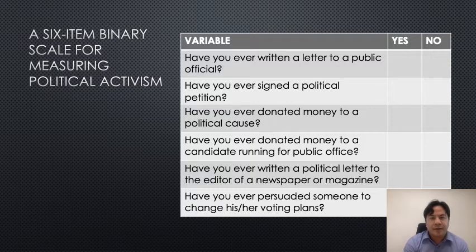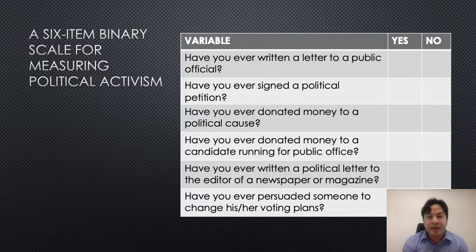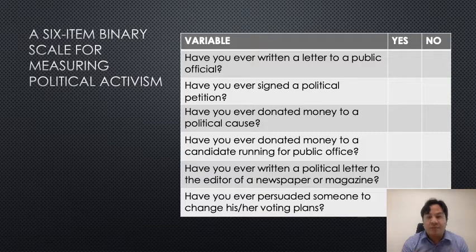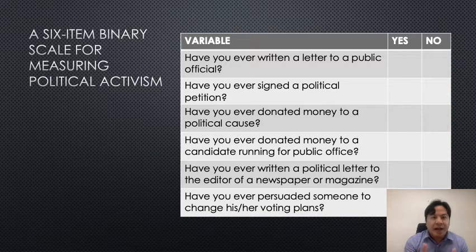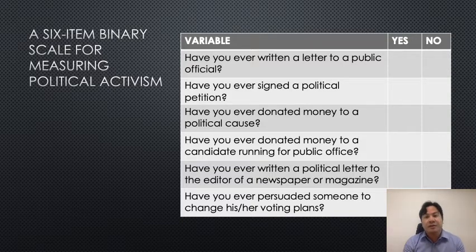This next slide shows another case of a binary scale. I want to show this because binary scales can be used to measure a particular construct by using few to several indicators that will characterize that construct. For example, let us take the construct of political activism — we would like to know if a person is just a so-so activist or a hardcore activist. We create six items describing activism, each a binary item, like 'Have you ever written a letter to a public official?' 'Have you ever signed a political petition?' 'Have you ever donated money to a political cause?' The total number of yes responses can be used as an overall measure of that person's political activism. A score of six would define a hardcore political activist.